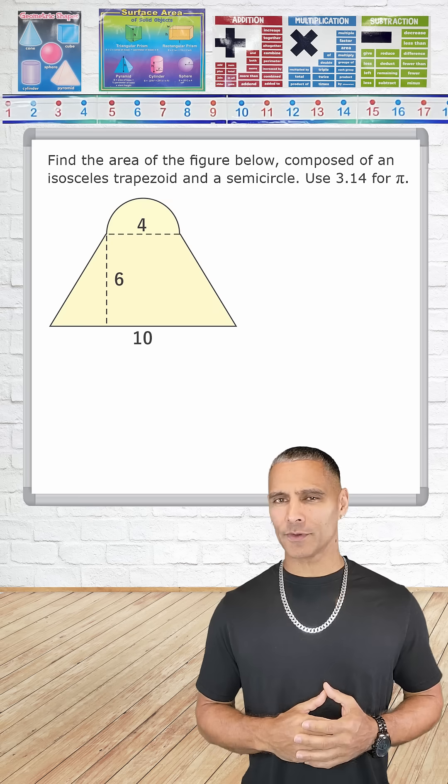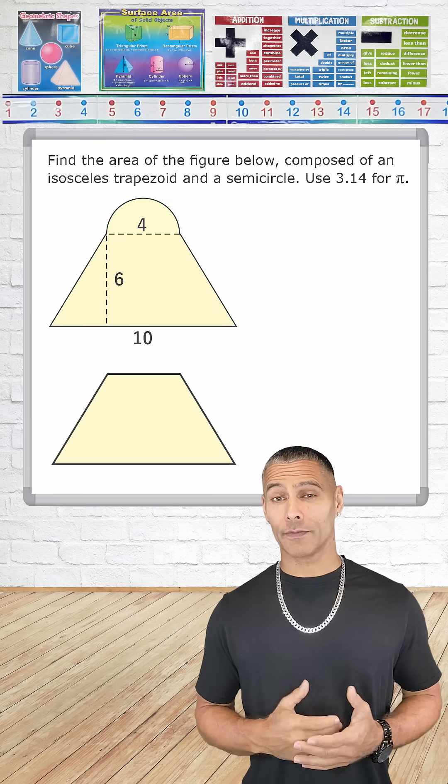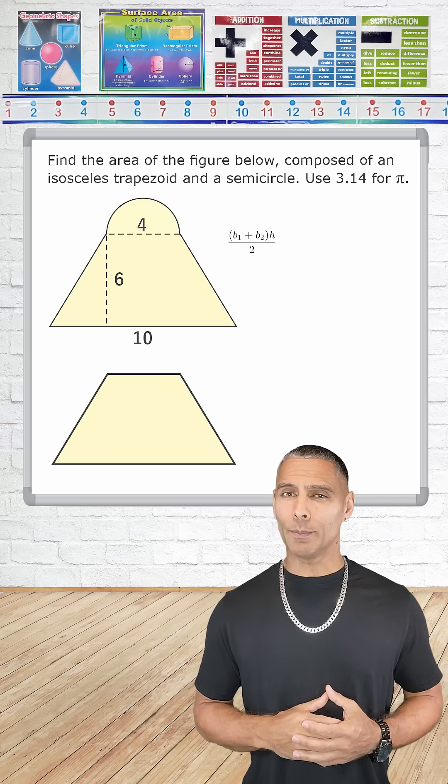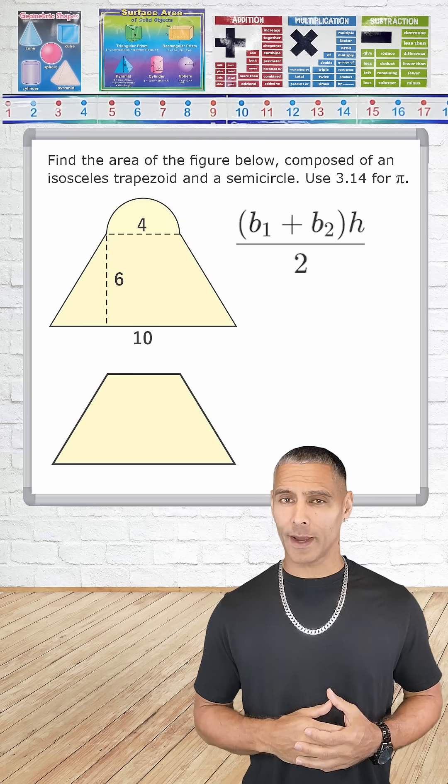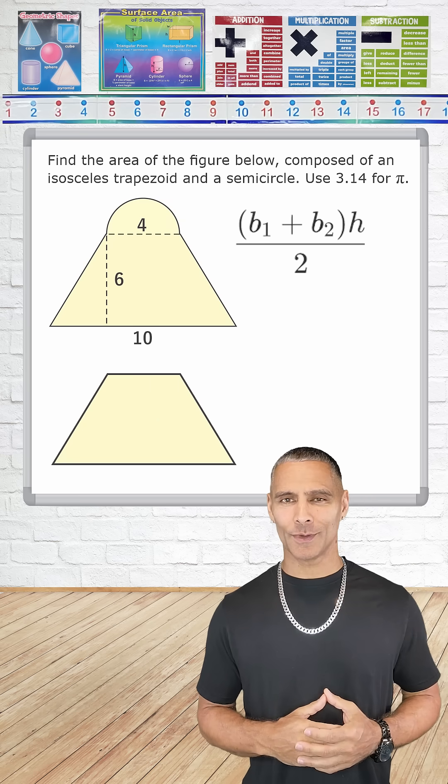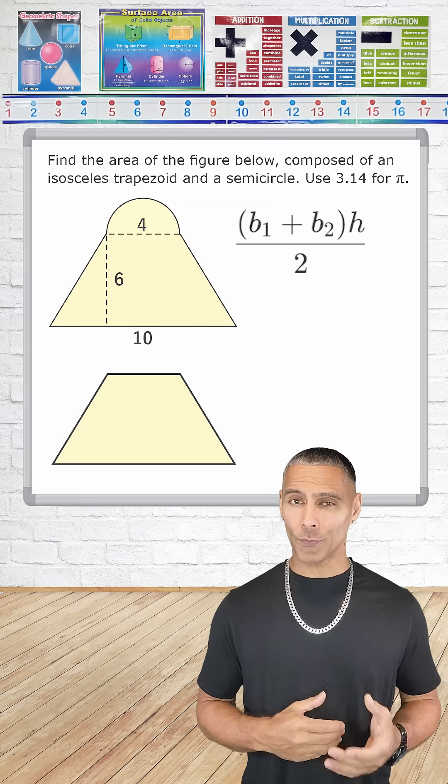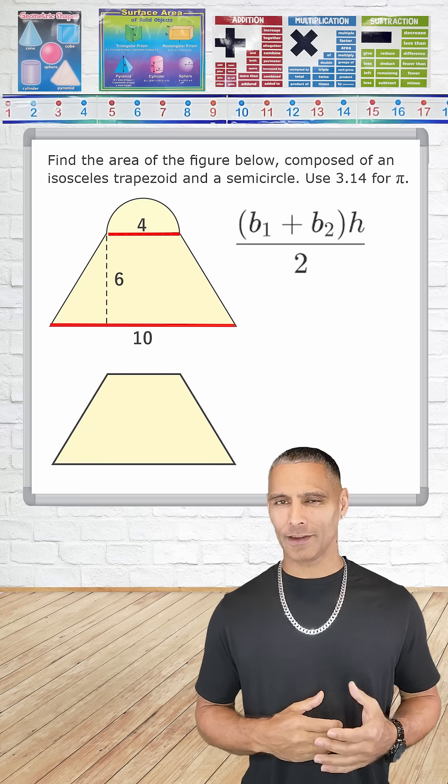First, let's find the area of the trapezoid. The formula for the area of a trapezoid is the sum of the two bases multiplied by the height of the trapezoid divided by 2. With this trapezoid, we have a top base of 4 and a bottom base of 10 and a height of 6.